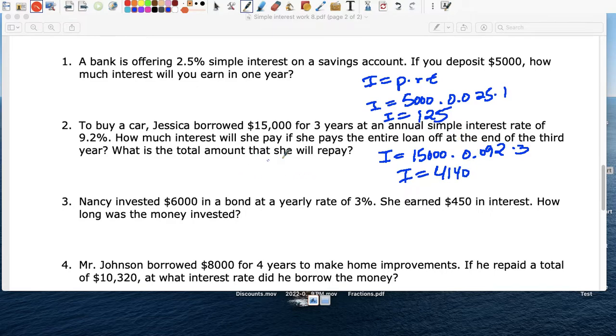So $15,000 times 0.092 times 3 equals $4,140. So what's the total amount that you have to pay? Okay, so at the end you would pay $15,000 that you borrowed, plus you would pay $4,140 in interest, so the total that you would end up paying for your car is $19,140.